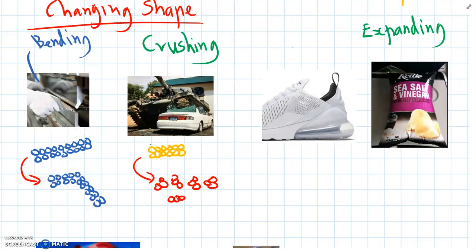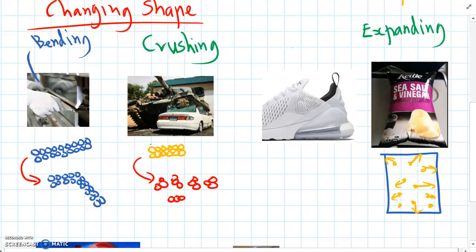And the air inside the chip packet, so there's lots of air particles inside the chip packet, they all expand and put more pressure on the outside of the chip packet. And that makes it take up more space.